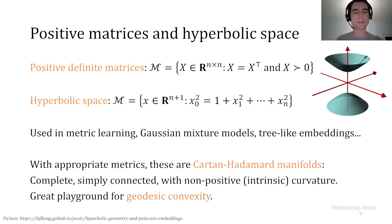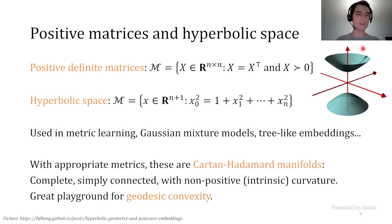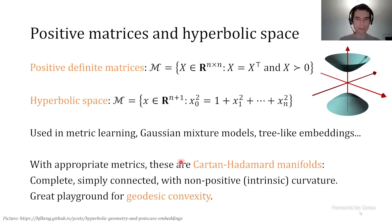For the hyperbolic space, it's kind of the same story. You can define hyperboloids in R^{n+1} with a certain equation, giving smooth sets in R^{n+1}, which are manifolds. But things really get interesting when you endow this with a special Riemannian metric. For those two sets in particular, applications would involve endowing them with a special metric that makes them Cartan–Hadamard manifolds—and that's where geodesic convexity really shines. We'll hear more about that later.